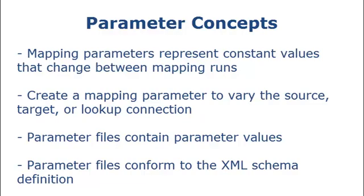For example, you might have a mapping that reads and writes data in your development database. You want to use the same mapping to read from an identical source and write to an identical target in your production database. Create a parameter to define the source and target connections. You specify parameter values in a parameter file. Parameter files are XML files that list user-defined parameters and their assigned values. They must conform to the schema definition that's included in the Power Center Express installation.